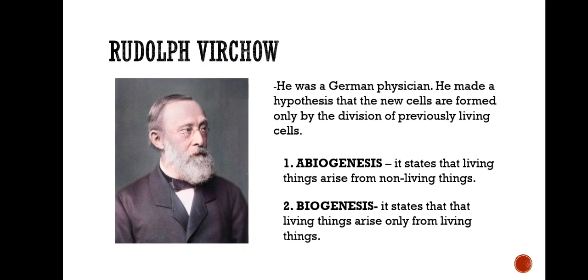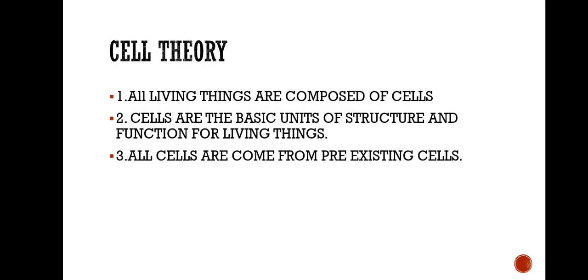There are three major tenets of cell theory. The first is that all living things are composed of cells. The second is that cells are the basic units of structure and function for living things. And lastly, all cells come from pre-existing cells.